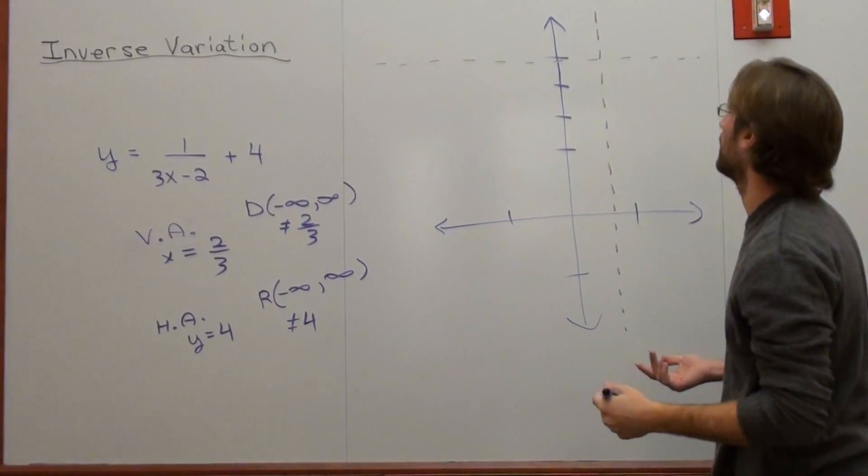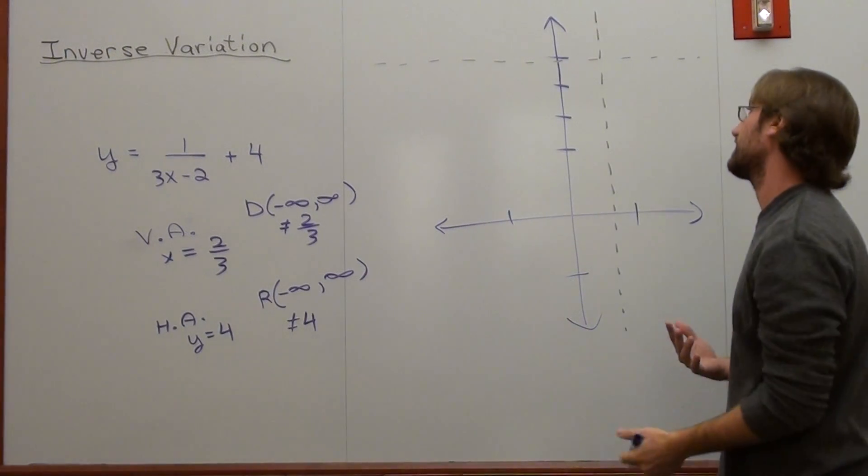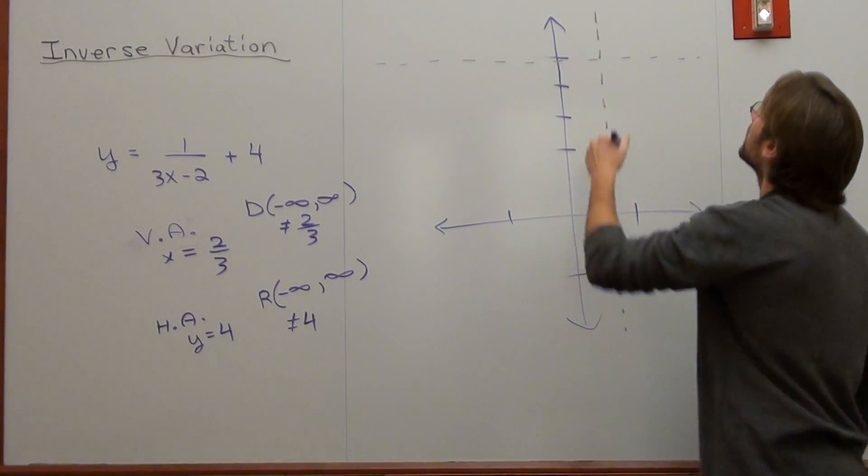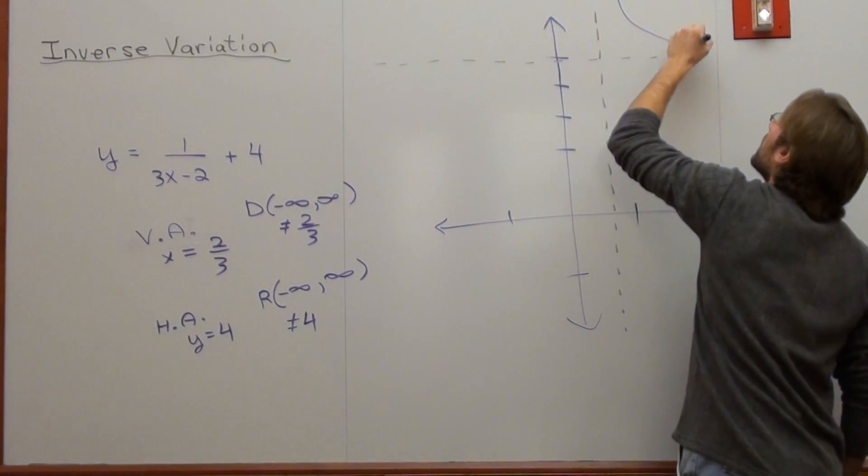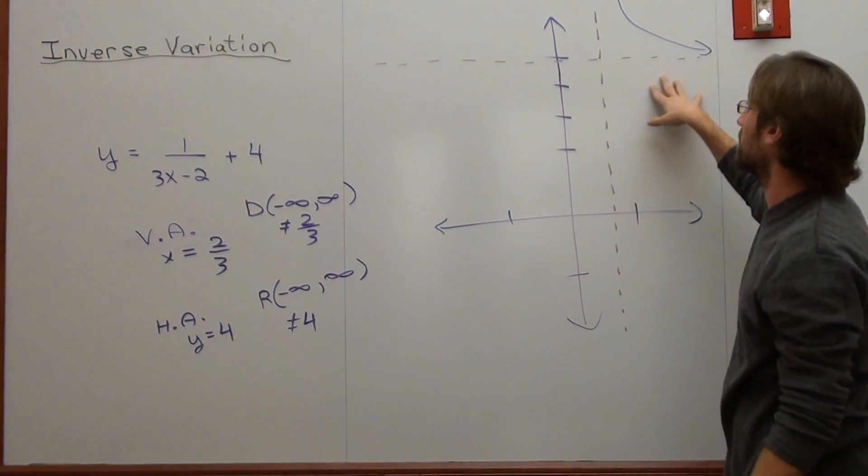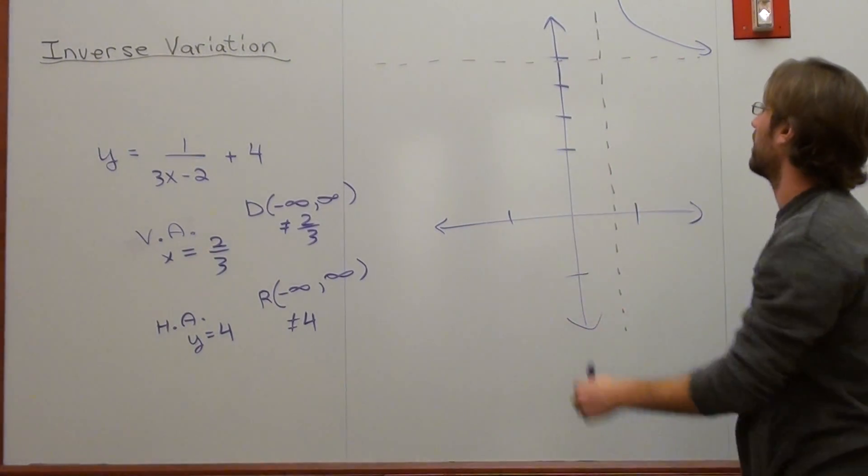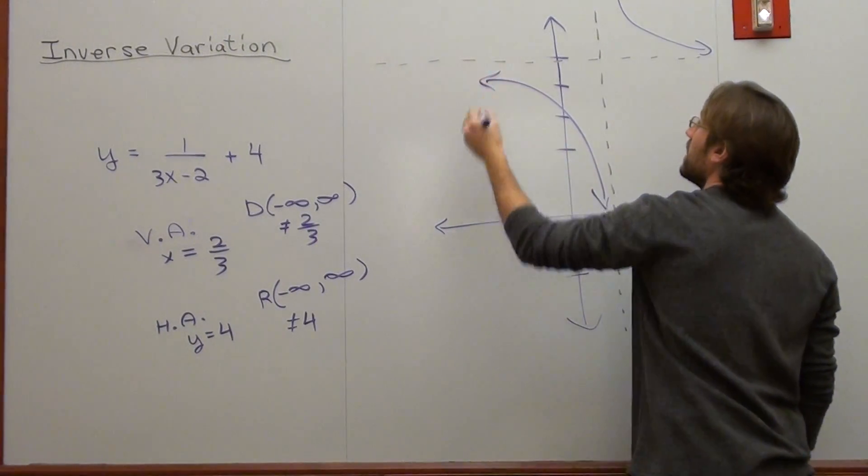my first one, like I said, I don't know exactly what it's going to look like. And, you know, that's just how it goes. It's going to look something like that. It won't go past the 4 and it won't hit the 2/3. And my next graph will look something like this.